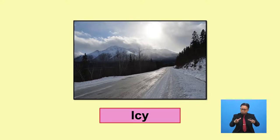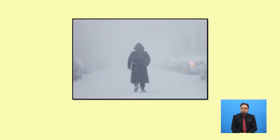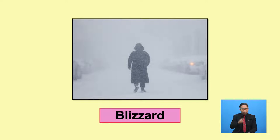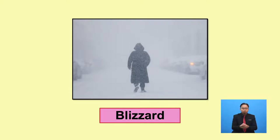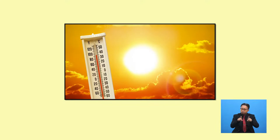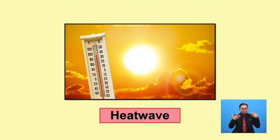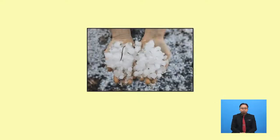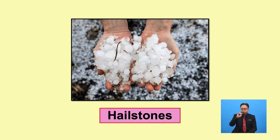Other bodies of water might freeze over. Blizzard — 'there's a blizzard, you can hardly see 10 metres.' A blizzard is a kind of storm. To count as a blizzard, you need heavy snow and strong winds at the same time. Heat wave is when it is hotter than usual for a long period of time — 'the temperature is 40 degrees, there's a heat wave.' Hailstones are small, hard balls of ice that fall from the sky like rain. We usually say 'it's hailing.'